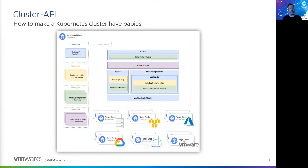Cluster API tries to make the way a Kubernetes cluster is defined a very standard thing, using the same language and object types as anything else you'd run in Kubernetes. This is a broader trend — you can define many different types of objects in Kubernetes: pods, containers, entire Kubernetes clusters, even VMs. That gives the ability to manage almost anything through Kubernetes — a very powerful capability.